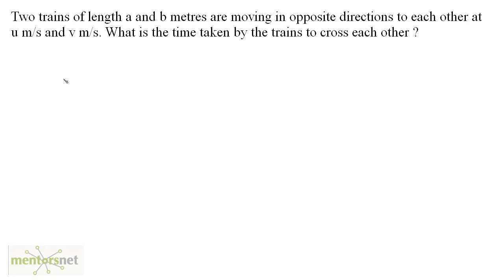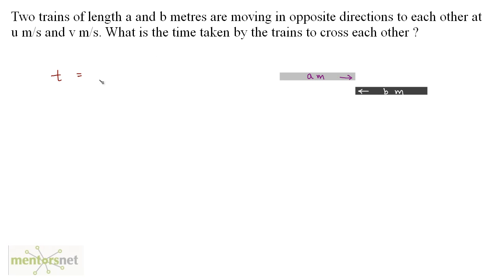Let us solve this question now. Two trains of length a and b meters are moving in opposite directions to each other at u meters per second and v meters per second. What is the time taken by the trains to cross each other? The situation is like this: you have one train which is a meters long and another train that is b meters long, and both are running in opposite directions. The formula for time taken is time equals distance upon speed. You can easily get the speed because these two objects are traveling in opposite directions, so the speed will be the relative speed, which is u plus v.